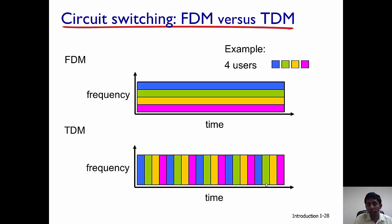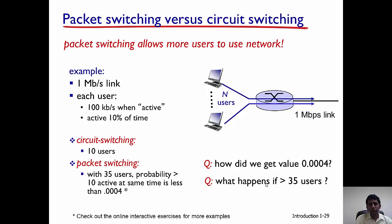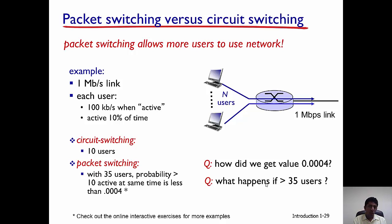This is how a circuit switch network works — the entire resources between source and destination have to be reserved before any data can be communicated. Now let's look at the main differences between a packet switch and a circuit switch network. Consider an example with n users connected to a router with a 1 Mbps outgoing link, where each active user wants to send data at 100 kilobits per second.